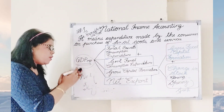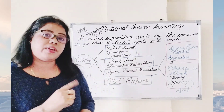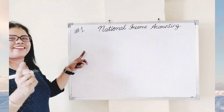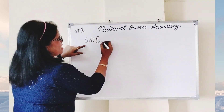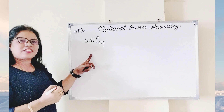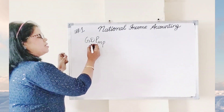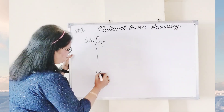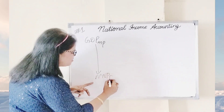How to convert this GDP at MP into NNP at FC? We have already discussed this in our previous topics. We are calculating GDP at MP using the expenditure method. How to convert GDP at MP into national income — that is NNP at FC? We are getting domestic income here, and now we need to calculate national income.